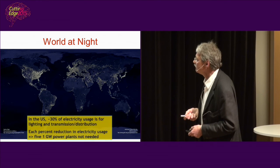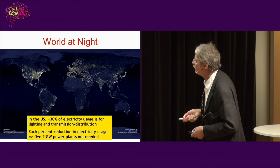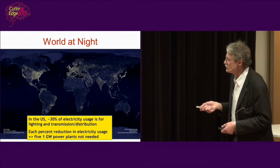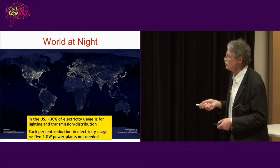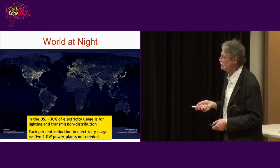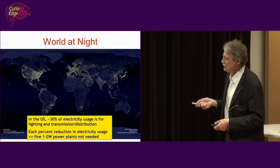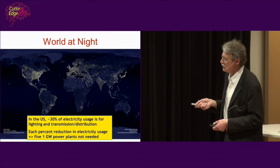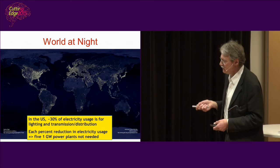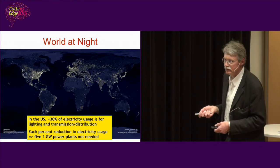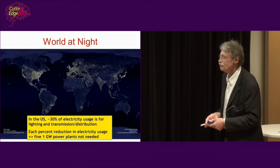I will just conclude here, saying that in the US, if you just take the US as an example, 30% of the electricity usage is for lighting and transmission and distribution. With the silicon carbide technology, maybe we can reduce that to 10%. That means that we can close something like 100 power plants. Thank you.